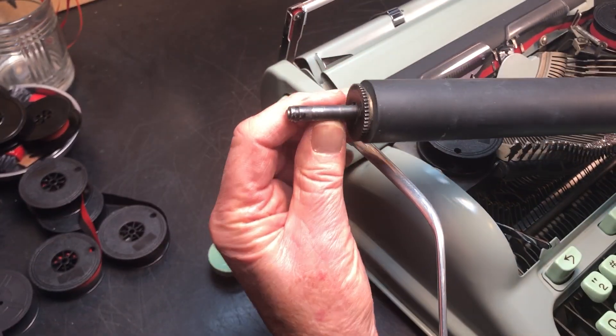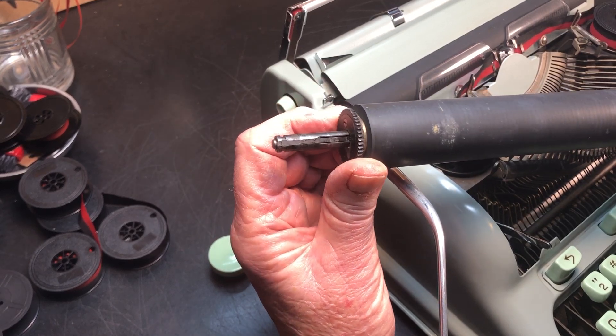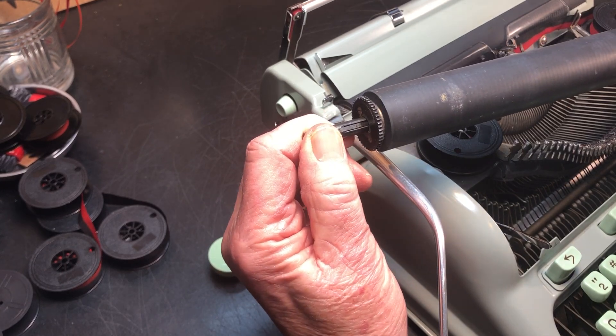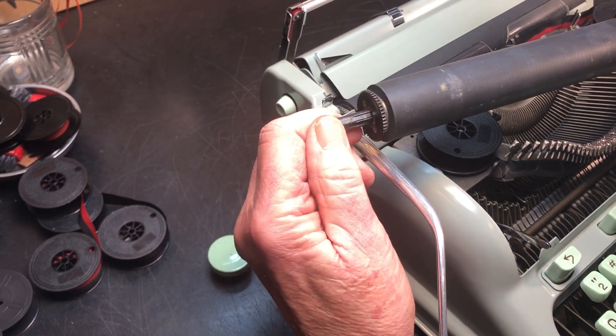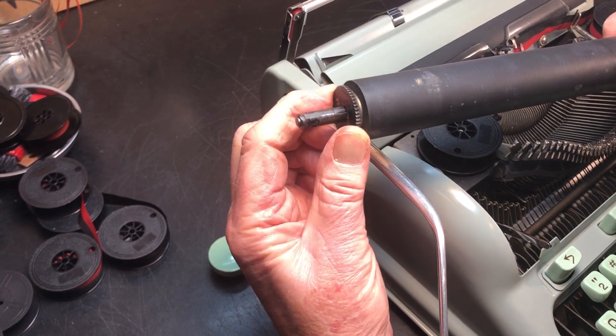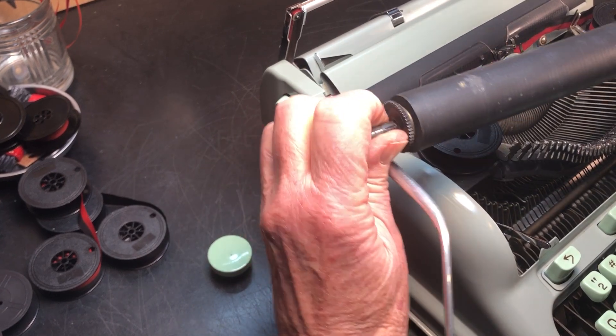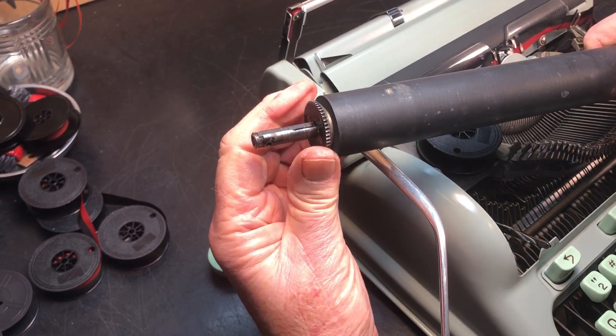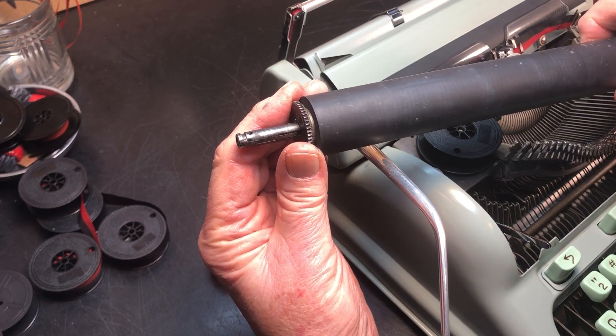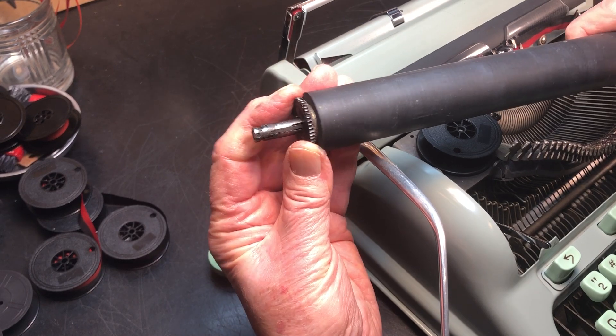Here's a little better view of it. Now it's freewheeling. But when I push this in, these springs right there will engage the gear. Now it's solid. It will not move. When you pull it out, those springs disengage this gear, allowing it to freewheel and reset your line wherever you want. And then when you push it back in, it locks it.